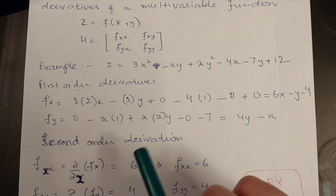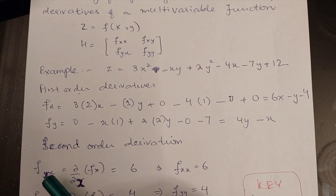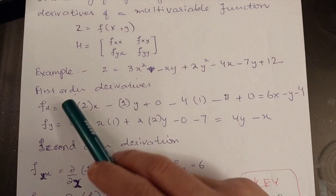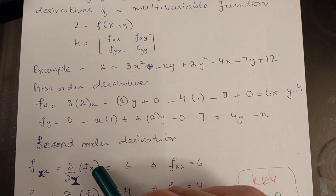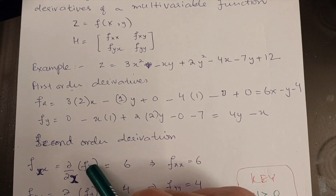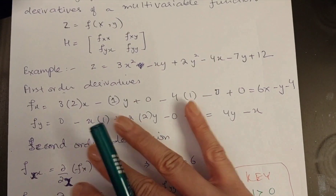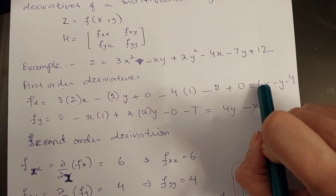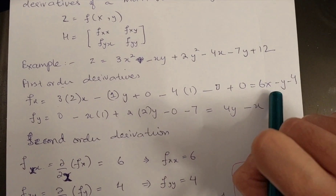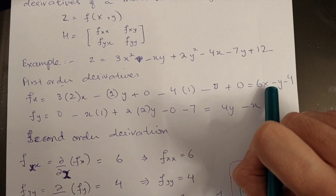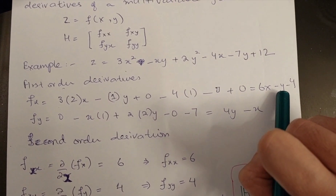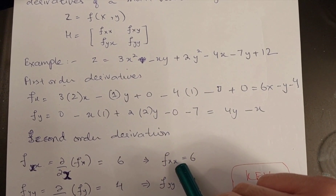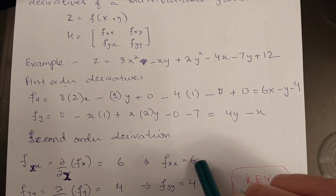Now I am going to calculate the second-order derivatives. To find the second-order derivative with respect to x (fxx), we take the first-order derivative fx and apply another partial derivative with respect to x. For the term 6x, we get 6 and x reduces in power to 1. The remaining terms give 0. So fxx, the second-order derivative with respect to x, is 6.